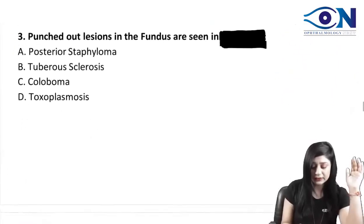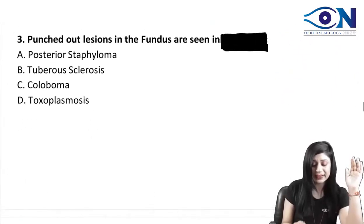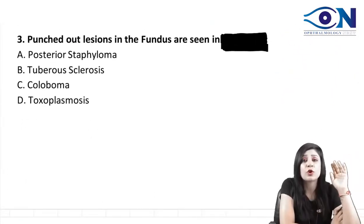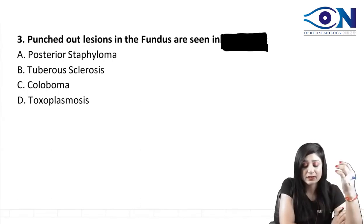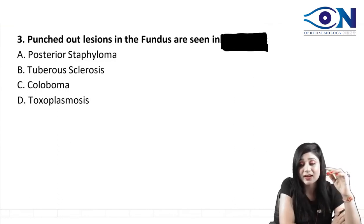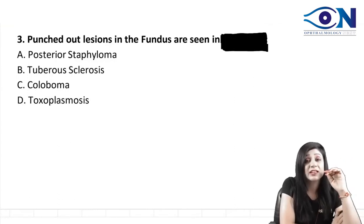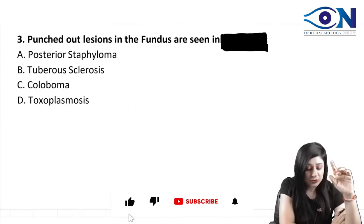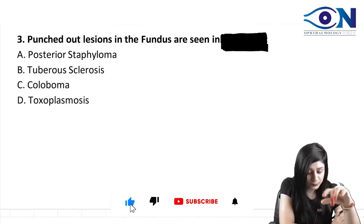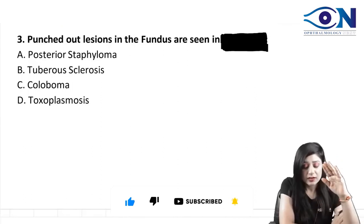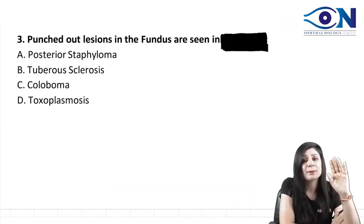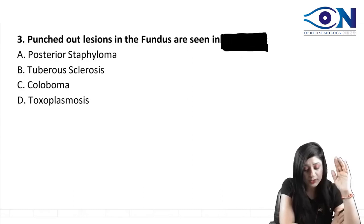This is a slightly different kind of question, and there was a lot of controversy in the language of the question. Many students said that punched out lesions in the fundus are seen in, and many said seen in all except. Based on the options, it should be 'seen in' because none of the other options show punched out lesions.